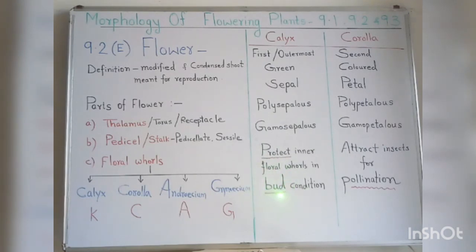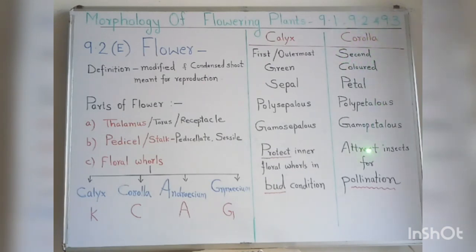The word 'bud' is very important here. The function of corolla is to attract insects for pollination.